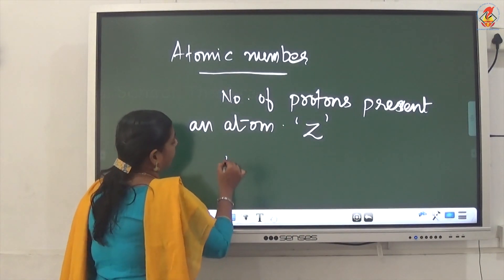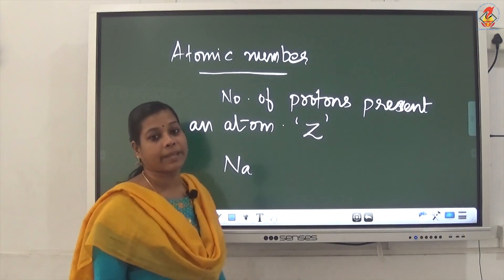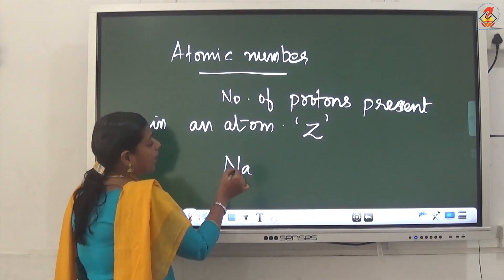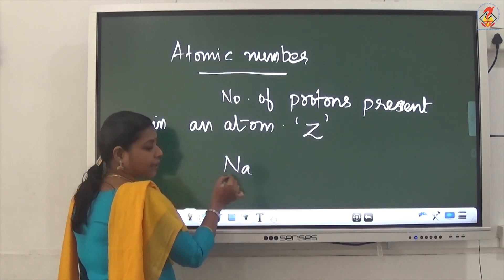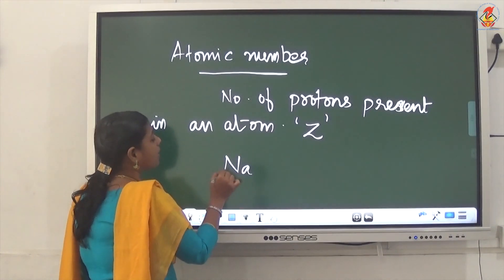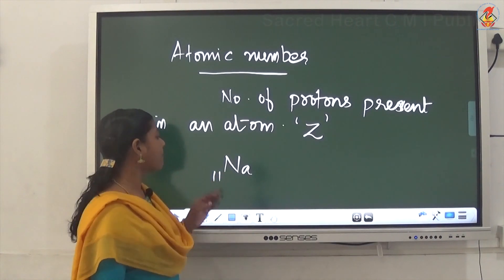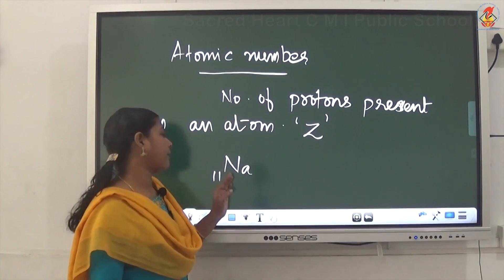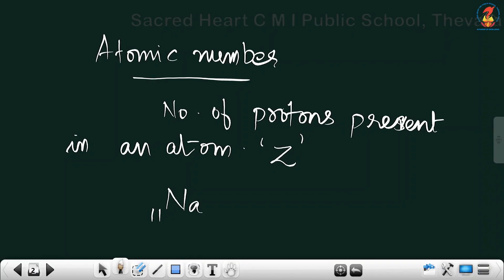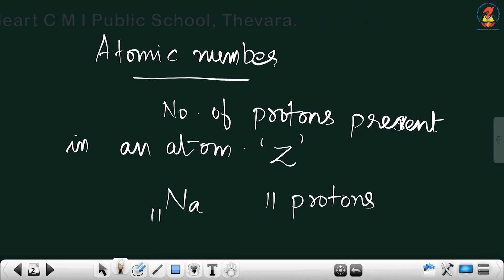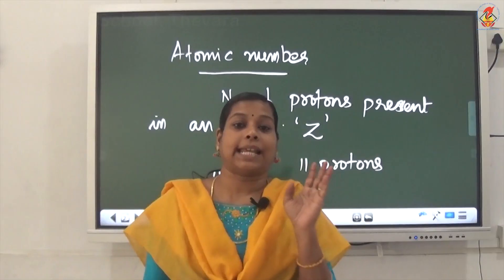Suppose sodium has atomic number 11. The atomic number is represented on the left side lower corner when writing the symbol of the element. So atomic number of sodium is 11, meaning sodium contains 11 protons.